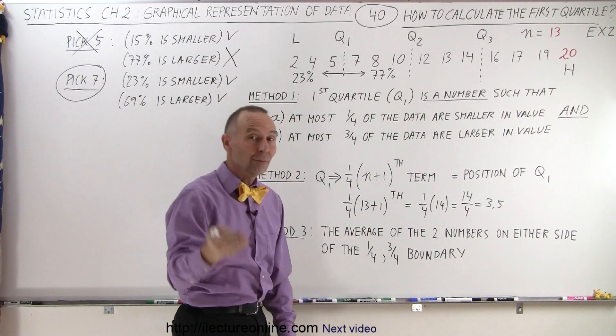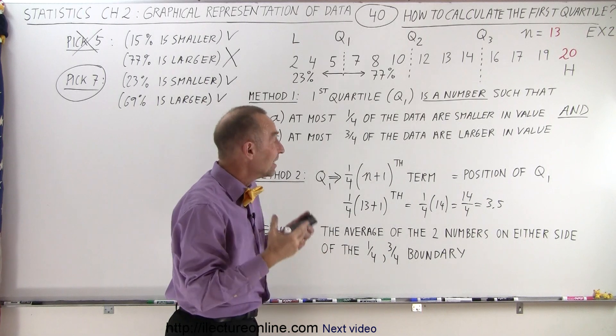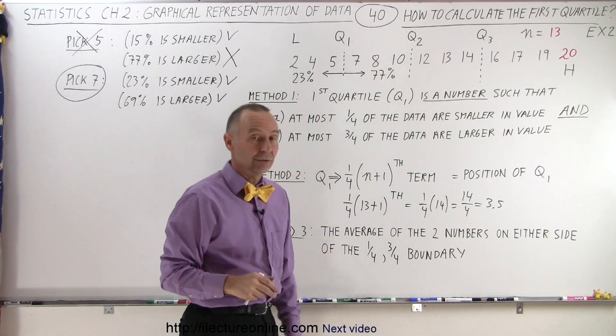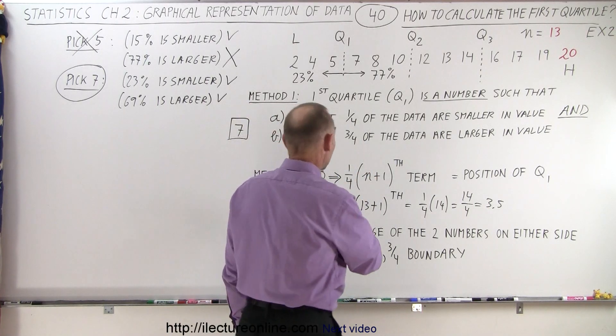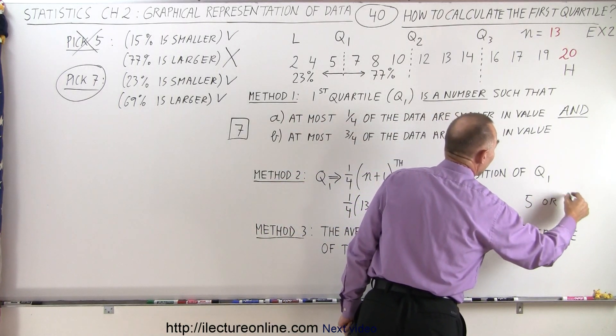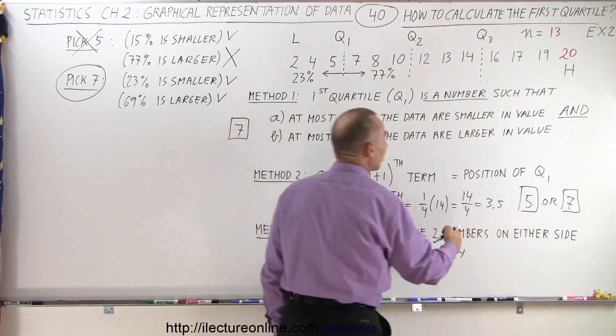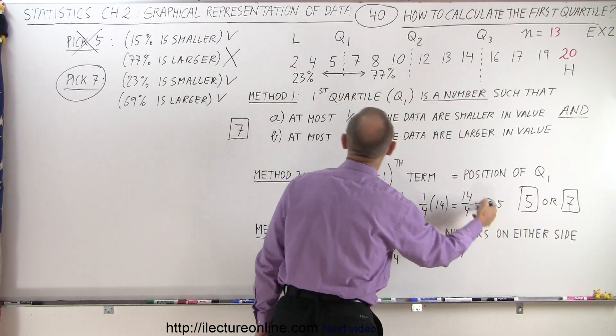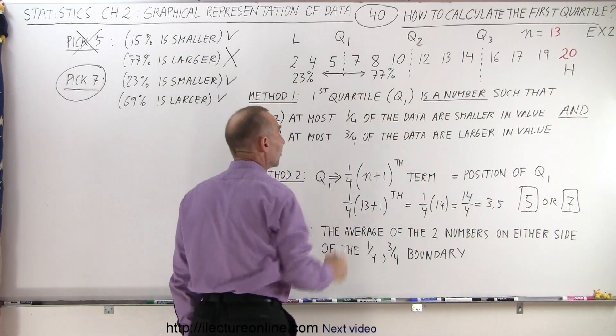So in that case, 5 or 7 have an equal value. So for that reason, method number two will give you either 5 or 7 as a proper value that meets the condition, because this is right halfway in between 5 and 7.